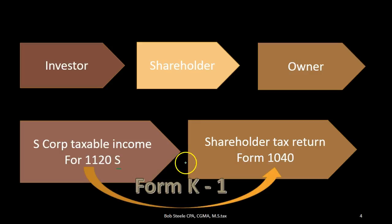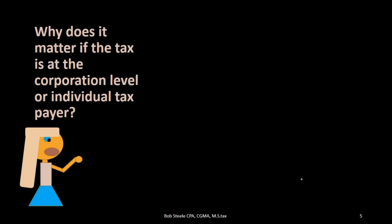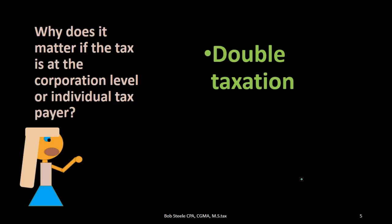Therefore, although we have to file a tax return for the S-Corporation, no tax is paid at the corporate level. Rather, it's going to be flowed through on the Form 1040, kind of like a W-2 for an S-Corporation, reporting the income that will then be reported on the Form 1040, eliminating that double taxation.